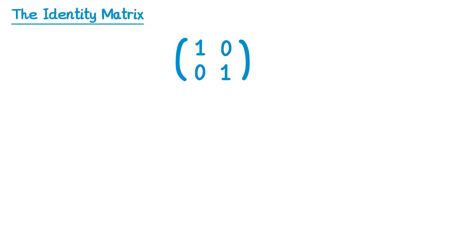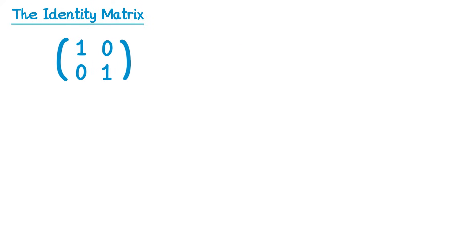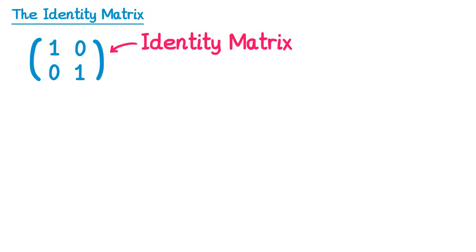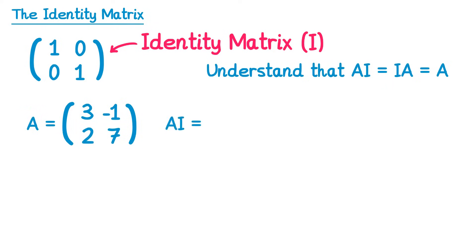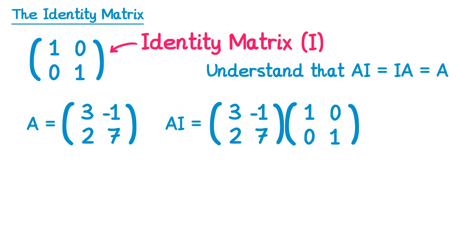So we can replace those in the matrix: one, zero, zero, one. This is known as the identity matrix for multiplication. We always denote the identity matrix with the capital letter I. The specification says you need to understand that A times I equals I times A equals A. So if we take a matrix A — I'm going to use three, negative one, two, seven — then A times I means we start with A and multiply it by I, the identity matrix one, zero, zero, one.